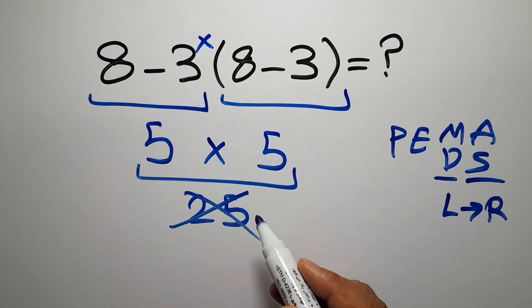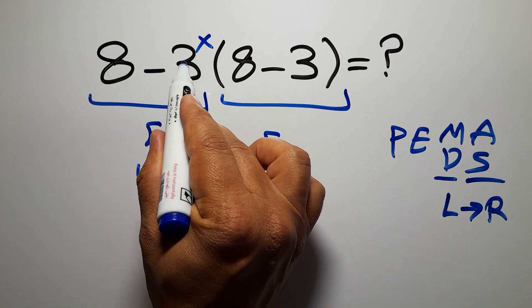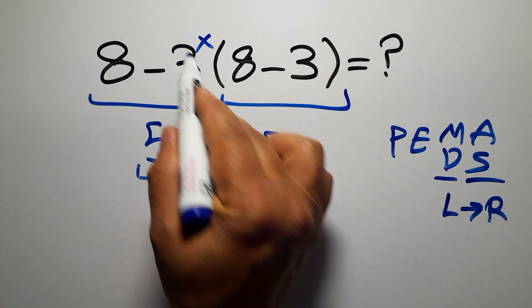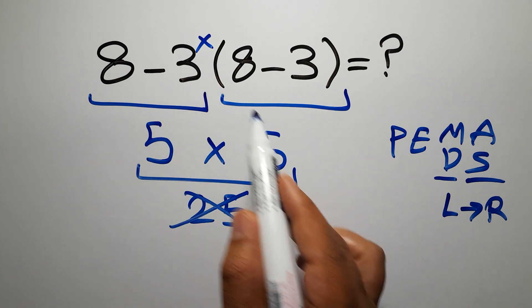Here we have a multiplication because in mathematics when we have a number next to parentheses it means multiplication, and we usually don't write the multiplication sign for brevity.